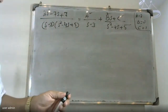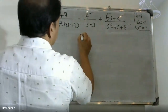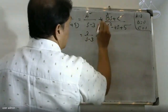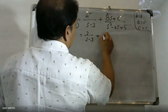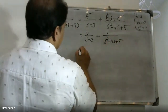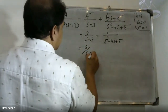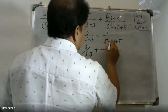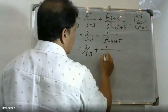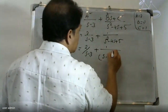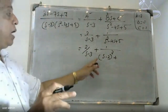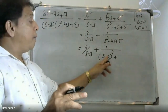Substituting A equals 2, B equals 0, C equals 1 into the partial fraction gives Y-bar equal to 2 over (s minus 3) plus 1 over (s squared minus 4s plus 5). We complete the square in the denominator: s squared minus 4s plus 5 equals (s minus 2) squared plus 1.